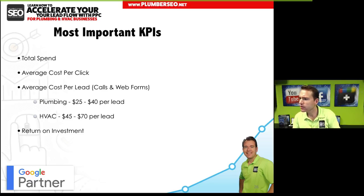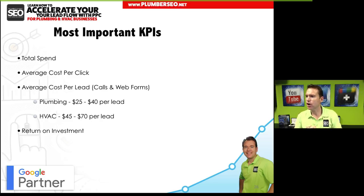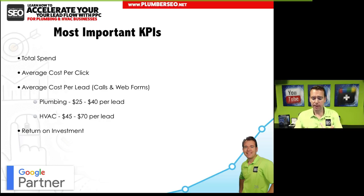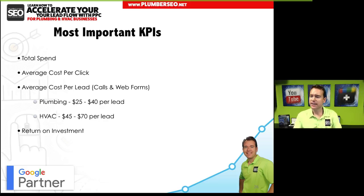Christian asks: how can we lower the cost per acquisition if the cost per click goes up? Look at your quality score, the keywords you're bidding on, and your landing pages — all of those things affect how much it costs to generate a lead.